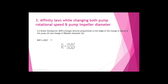For relationship 3.3: brake horsepower changes directly proportional to the cube of the change in speed of the pump and change in impeller diameter. PHP is directly proportional to (N × D)³, so PHP1/PHP2 = (N1 × D1)³/(N2 × D2)³.